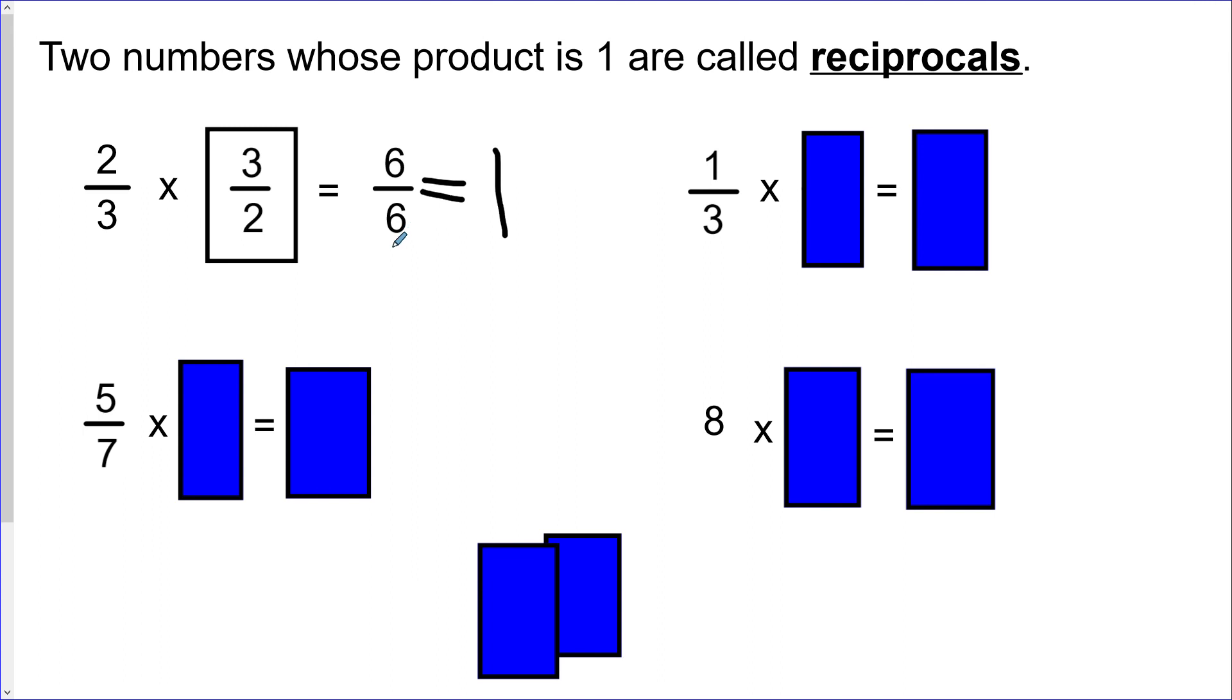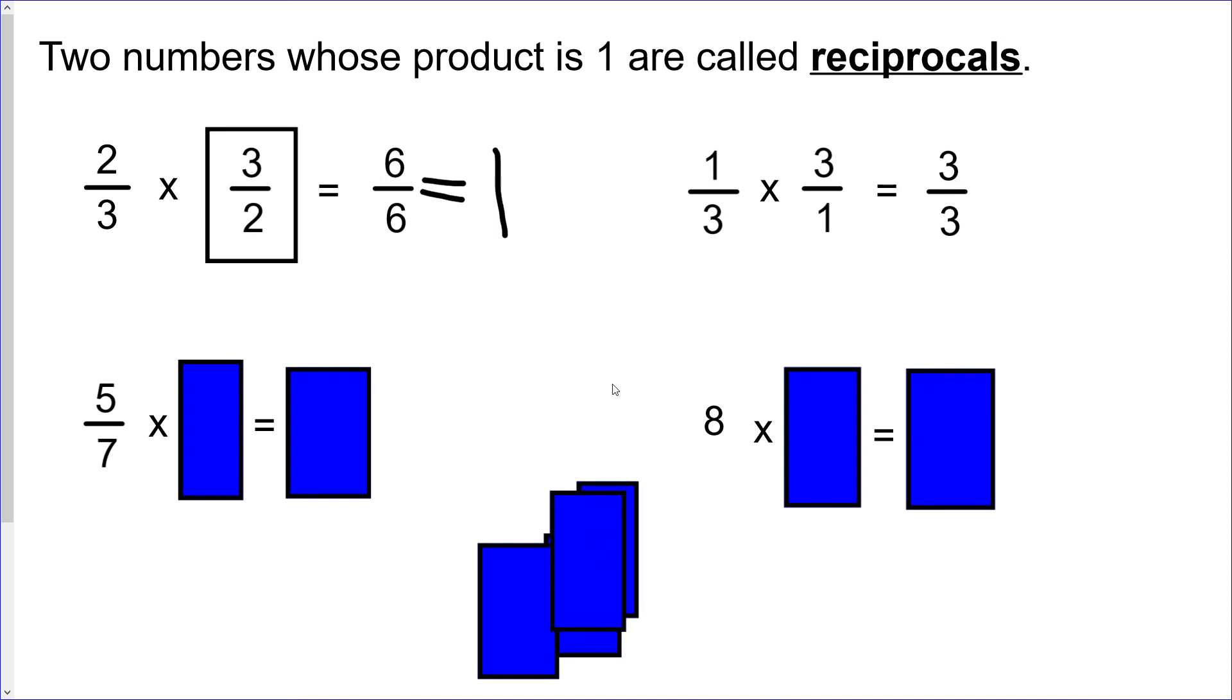And any number over itself like that always equals one. It could be six over six or fifty over fifty or one million over one million, it will reduce to one. So all you're doing when you're finding the reciprocal is you are finding the number that is basically your original fraction except flipped over. We'll do one more example here and then I'm going to let you try the bottom two just for a moment before you just take my answers. So one-third, and then we want that flipped over, so that's three over one. And then when you multiply that through, top times top, bottom times bottom, you end up with three over three which again can reduce down to one.